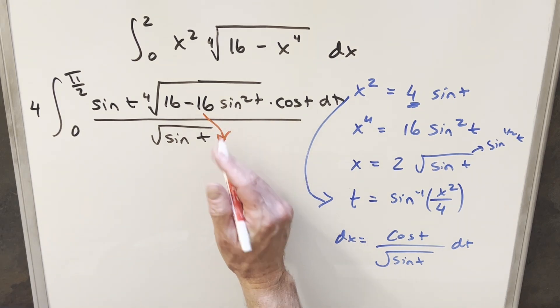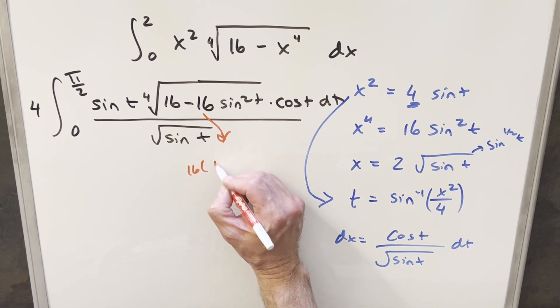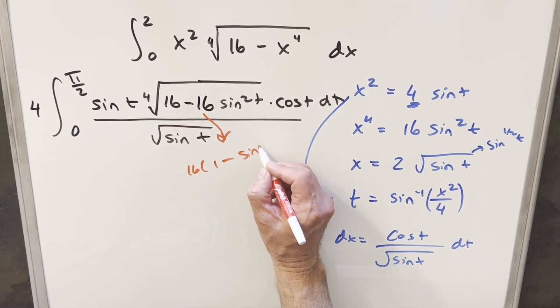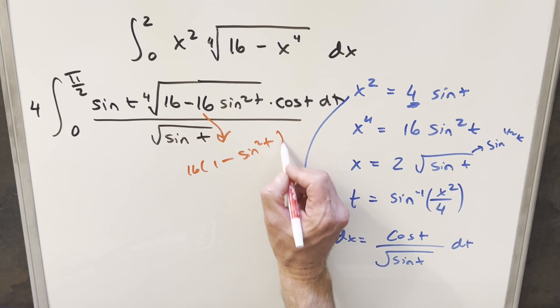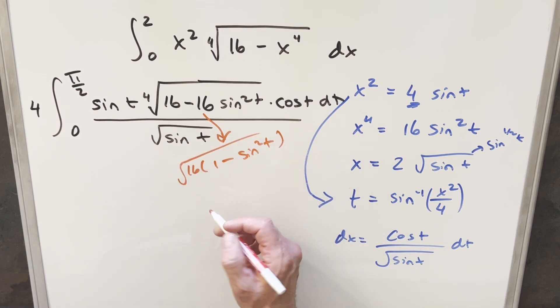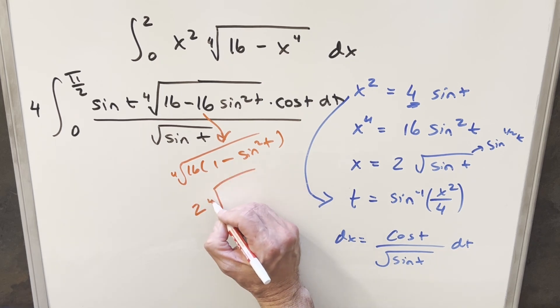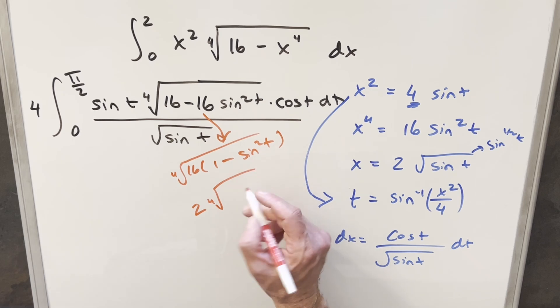But now we have quite a bit of simplification we can do. Like first, right here with this 16 minus 16, we can factor 16 out of this and write it as 1 minus sine squared t. This is all within the fourth root. And I know this is kind of, I'm sorry about that. So when we take the fourth root, when we break it up, we take the fourth root of 16, we have this becomes a 2. We have our fourth root. 1 minus sine squared is cosine squared t.